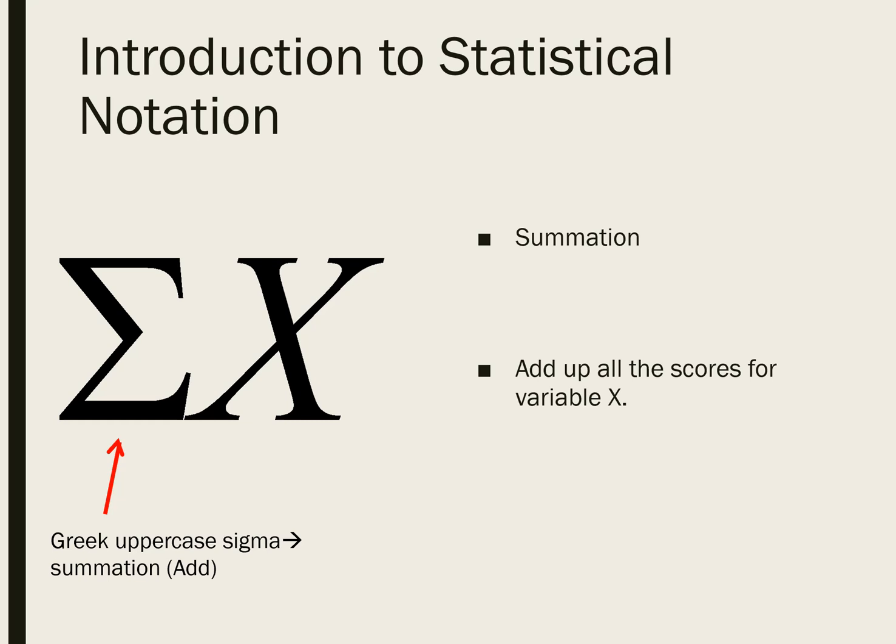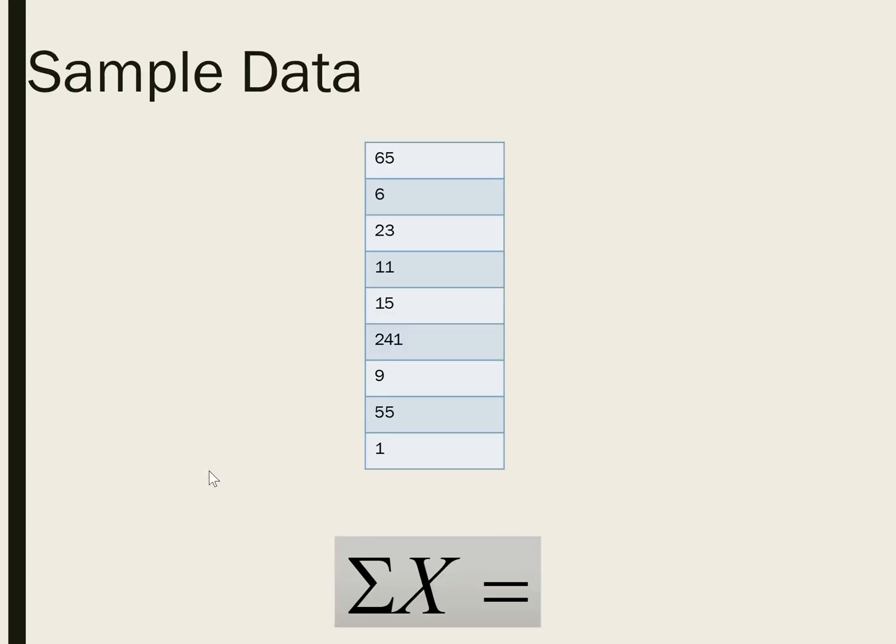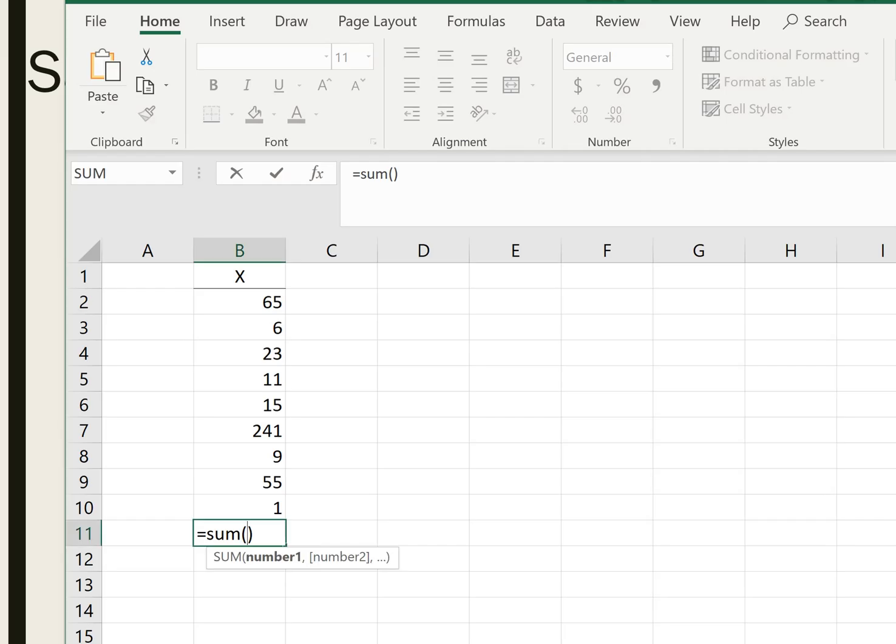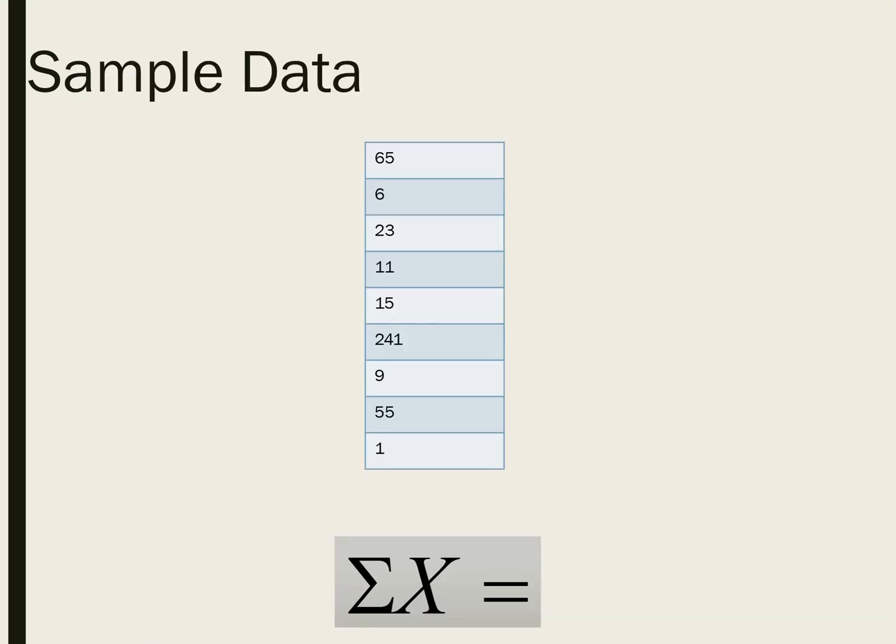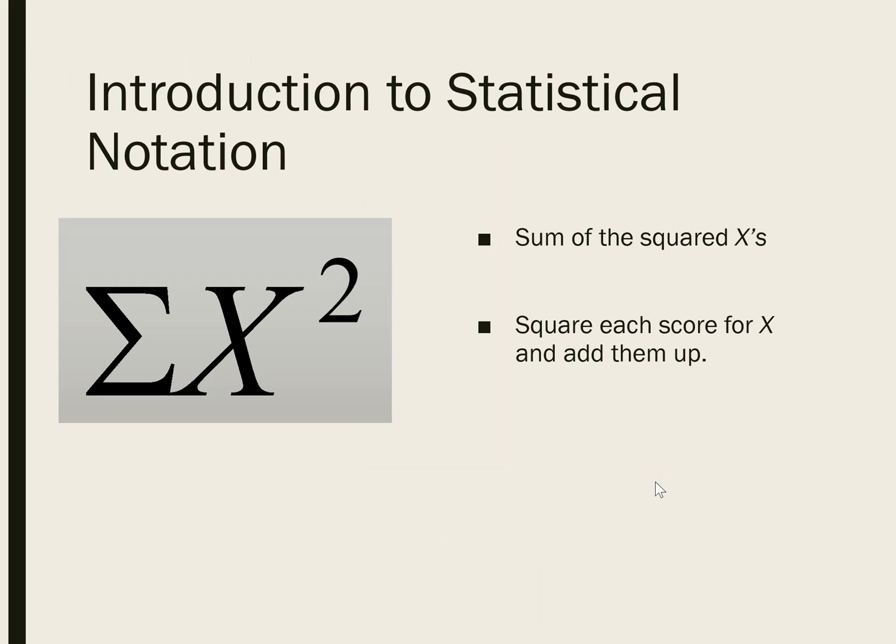So if we had a small data set like the one we see here, we would add up all the values for X, and we would have sum of X or sigma X. So I've entered them in a spreadsheet to do this somewhat quickly. So we'll add up all the scores for variable X, and we get 426, and that's simply the meaning of the symbol sigma.